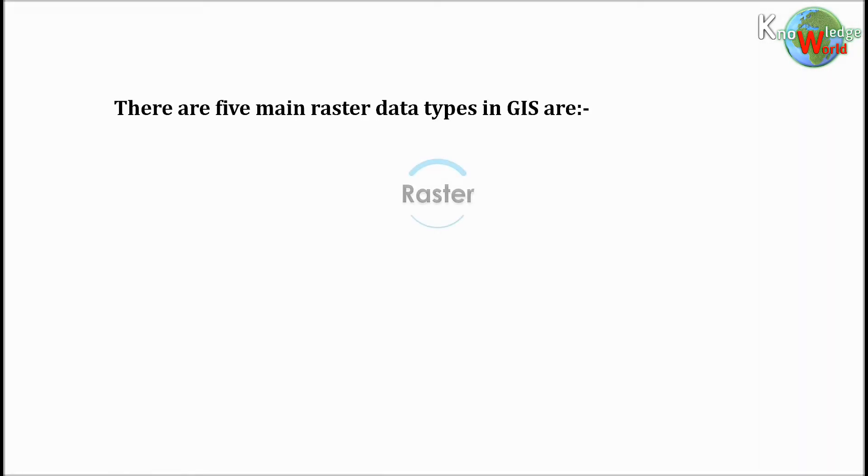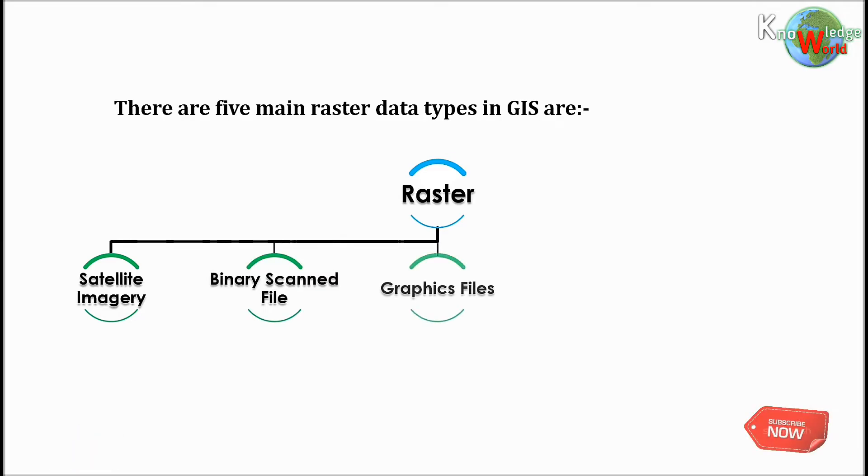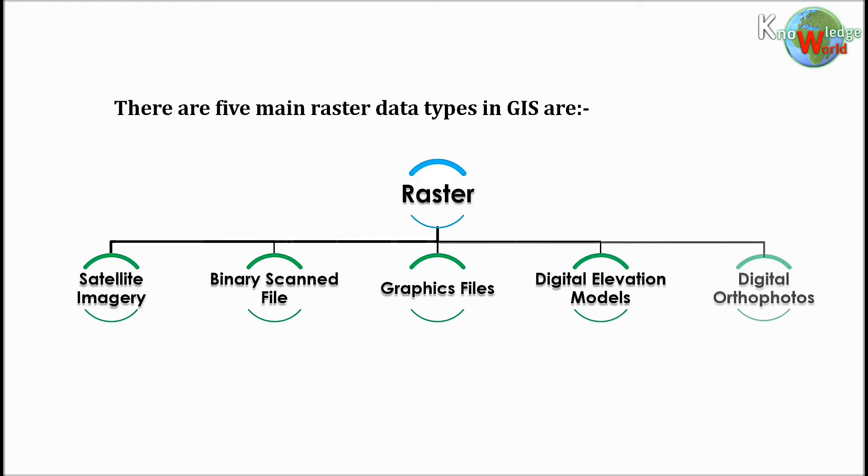There are five main raster data types in GIS: Number one, satellite imagery. Number two, binary scanned file. Number three, graphics files. Number four, digital elevation models. Number five, digital orthophotos.